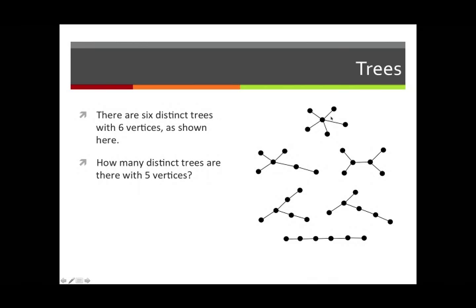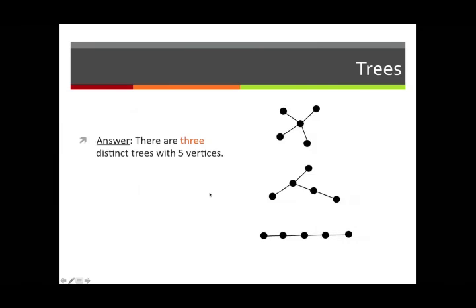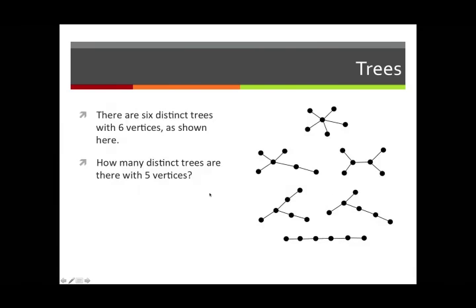Now, the largest degree that we can have for a vertex is 5. And if you have a vertex of degree 5, then, in fact, it must be connected to all the other vertices by single edges. And once you do that, well, that's your tree. That's a tree with six vertices. And it's the only possibility if you want to have a vertex of degree 5.